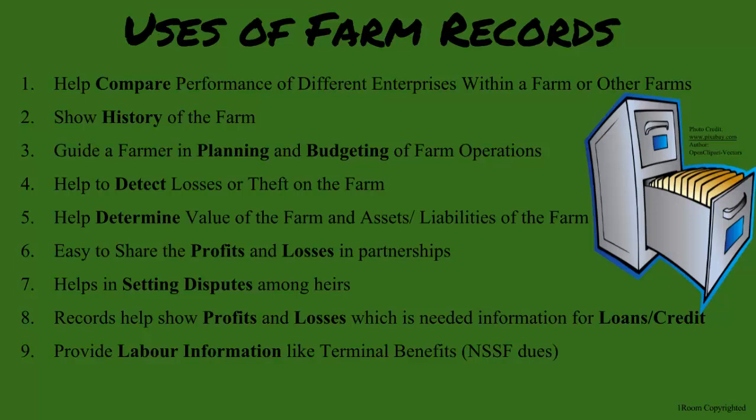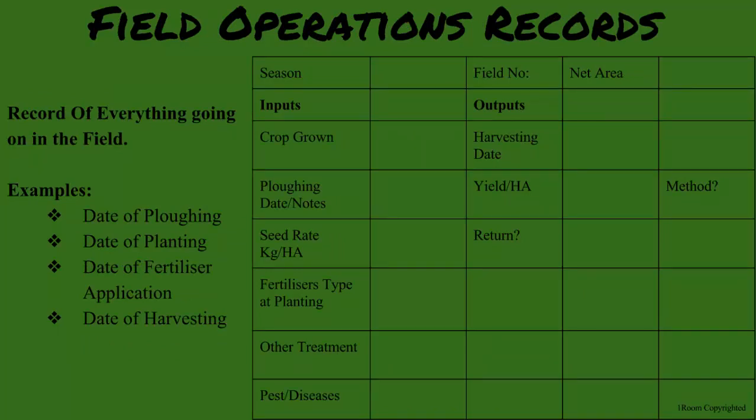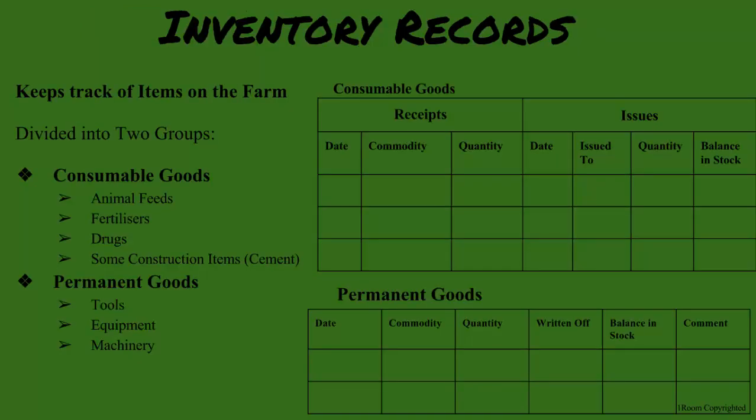Do you have an example of some farm records that help you keep in order? Let's have a look. First off is production records — this is what lets me know how well my farm is doing, from the whole farm output down to how much a single crop produces. That leads me to field operation records; this is how I keep track of everything I do in the field. It would be really bad if I put fertilizer on twice. When you apply the fertilizer, you have to track how much you use. That is a consumable good and tracked separately from my permanent goods such as tools, equipment, and machinery.